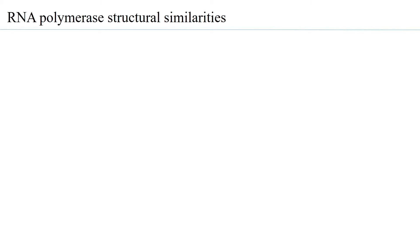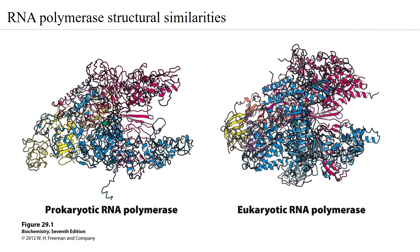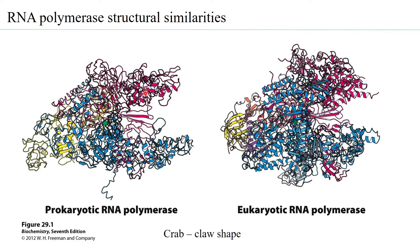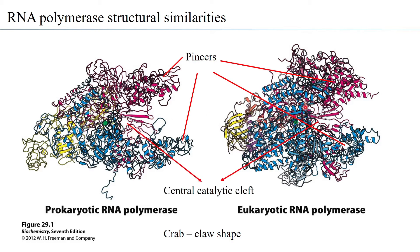Now let us look at the structural similarities between the RNA polymerase of the prokaryotic system and that of the eukaryotes. The RNA polymerases of both prokaryotes and eukaryotes have what is called the CRAB-claw shape. These domains contribute to making the pincers of the CRAB-claw, and right in between these pincers is the central catalytic cleft where the transcription bubble is formed, with several domains present that enable forming channels through the RNA polymerases.